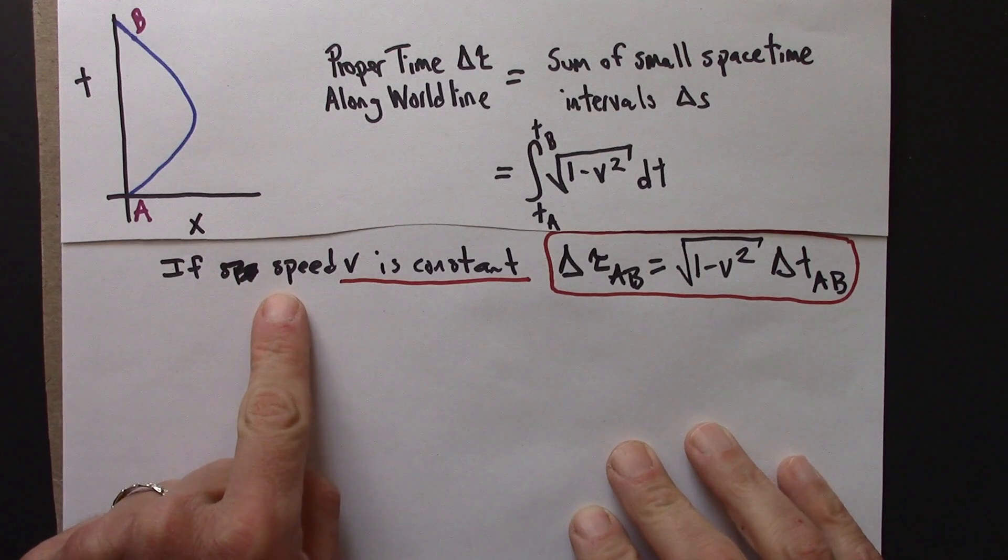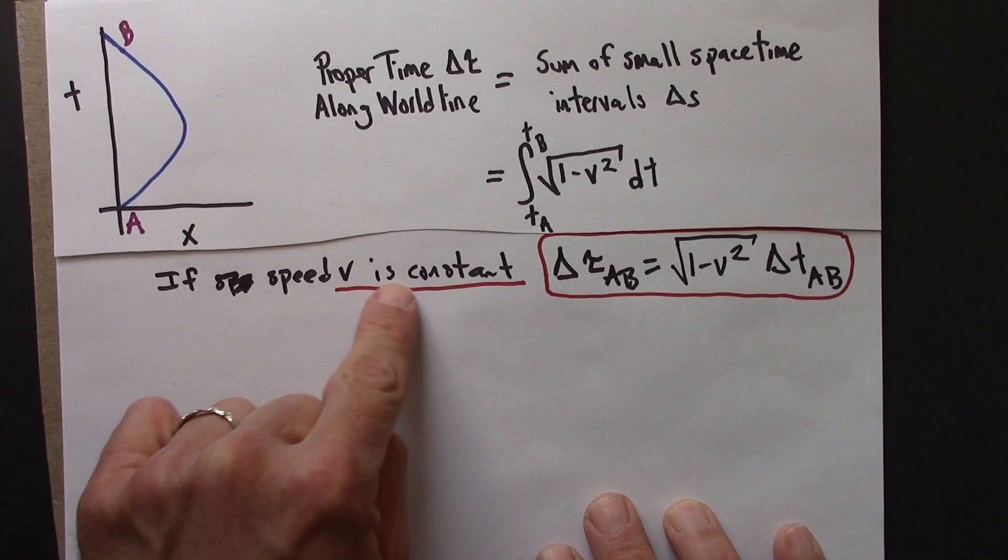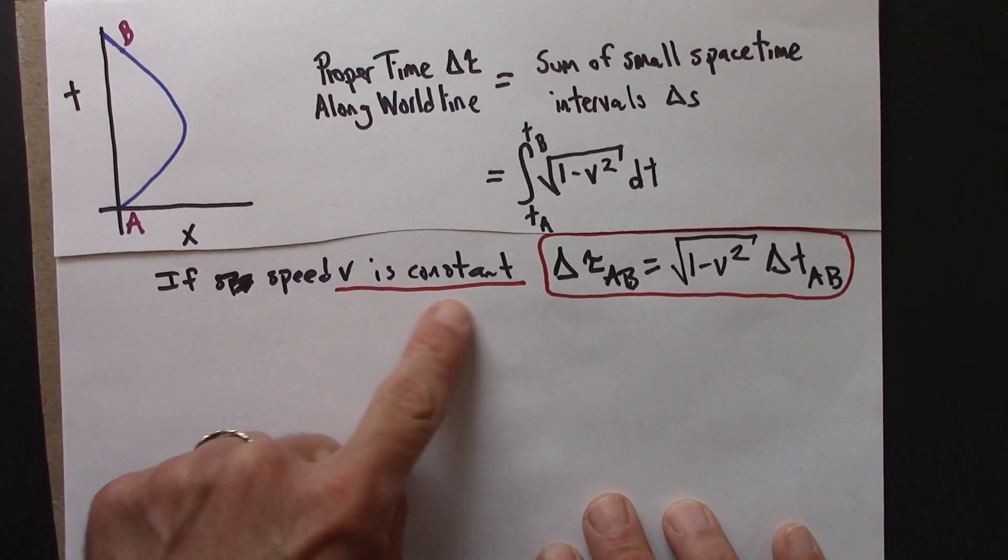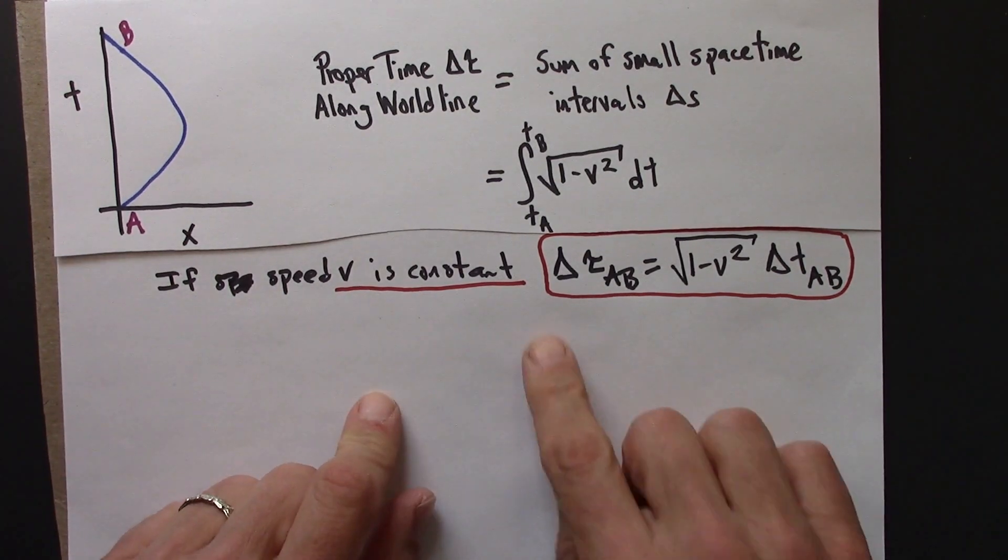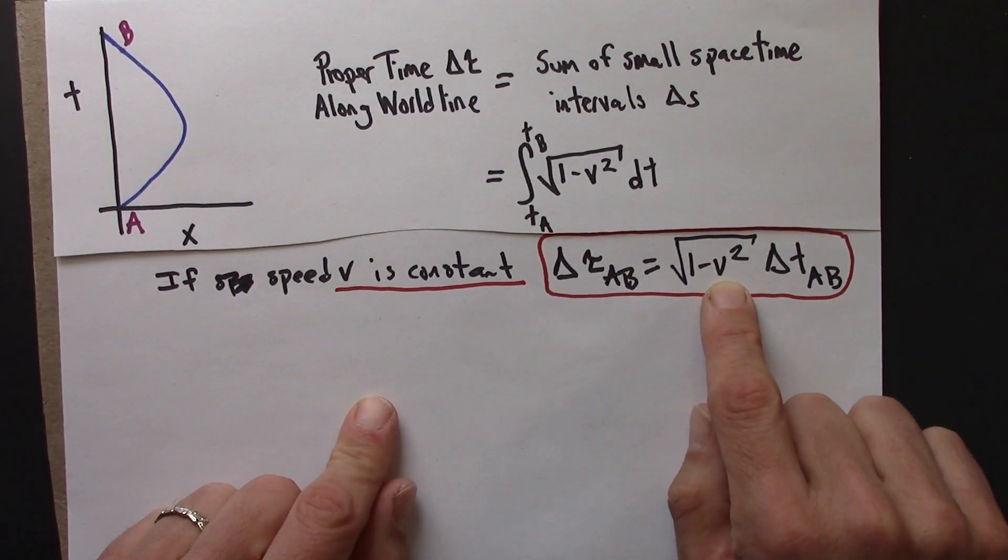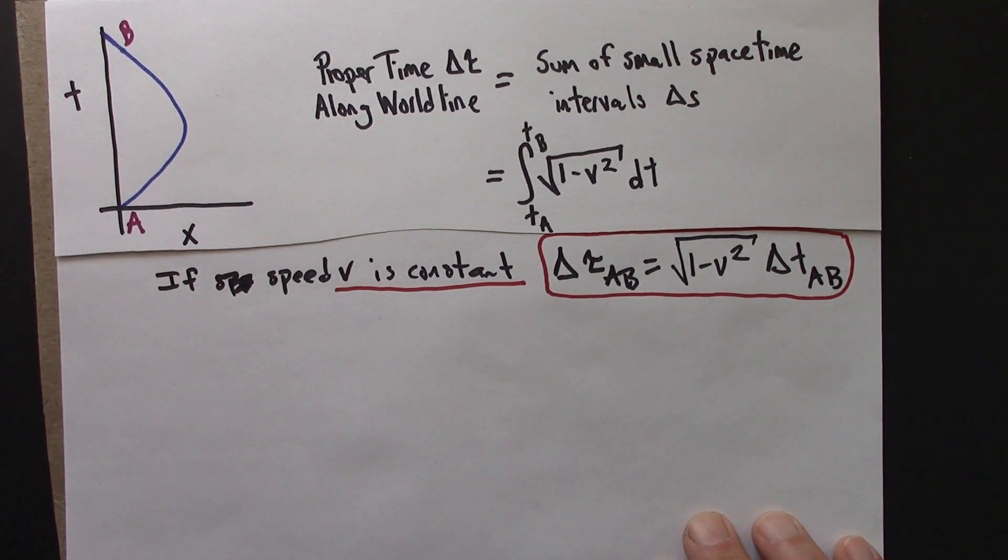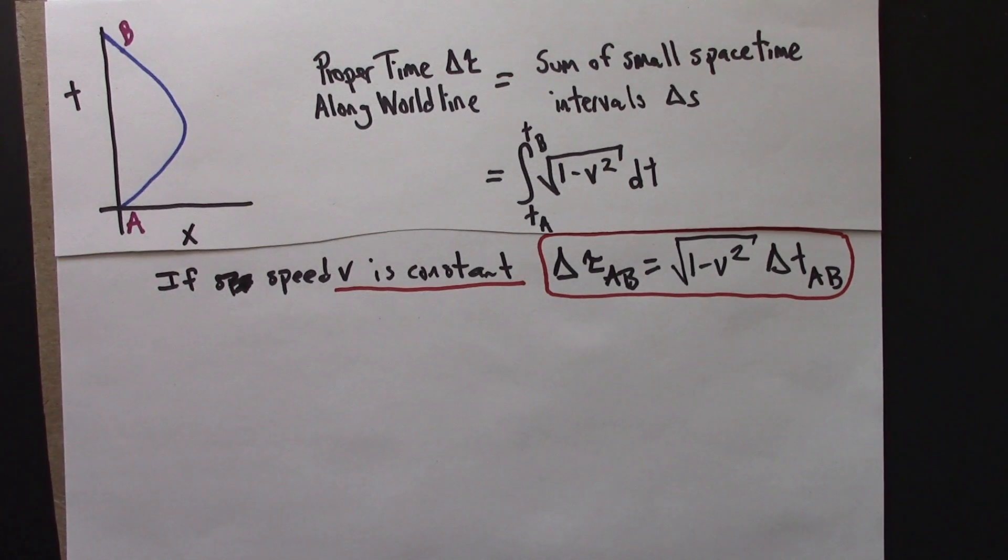So this is the speed, not the velocity. It's possible you could use this formula for a clock that's moving in a circle at a constant speed. The velocity is different because the direction is changing, but as long as the speed is constant, v squared will be constant, and then this formula applies. So let me say a little bit more about what this formula is telling us and how to use it. And then in the next video we'll work through an example.